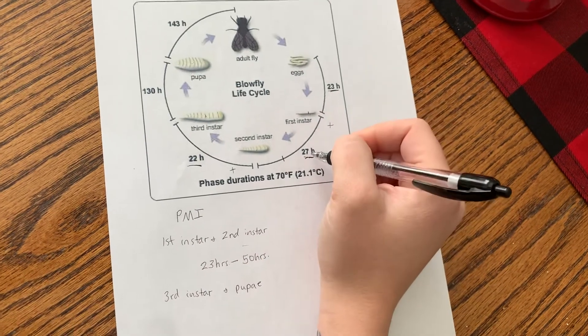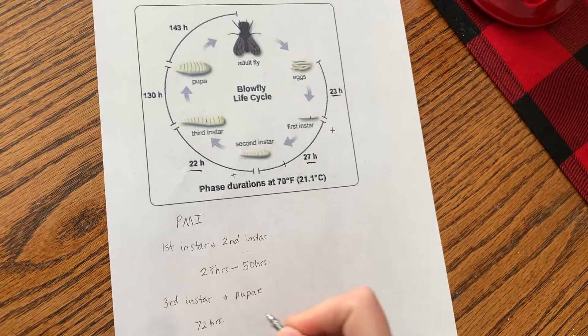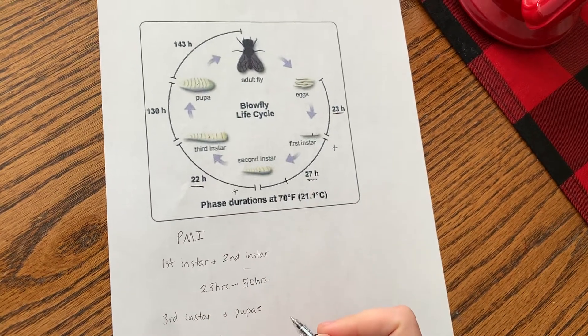So 23 plus 27 plus 22, that's going to give us 72 hours and that's as soon ago as it could have been to give us third instar larvae.